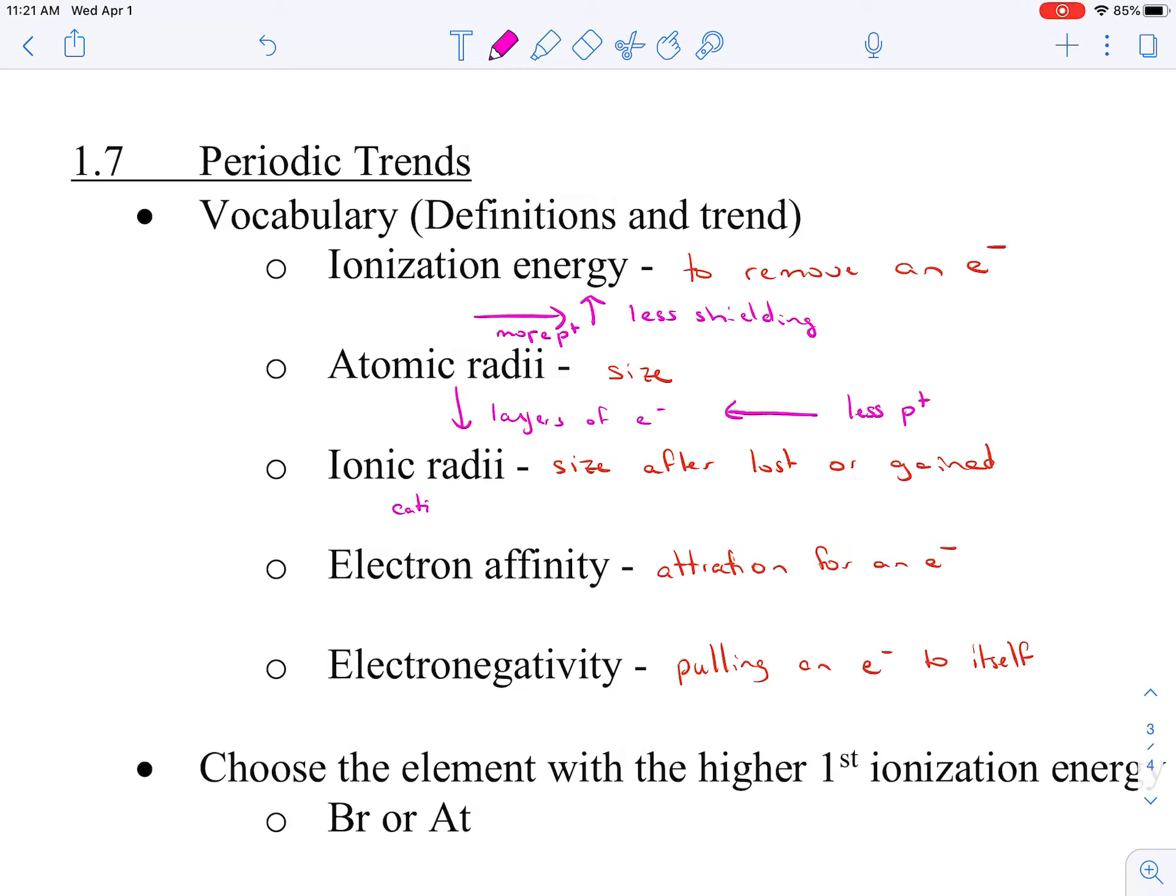Ionic radii, our cations, remember cations are the positive ones, are smaller, and that's because they have a greater proton to electron ratio. And our anions, which are negative, are going to be a little larger, and again that's due to our ratio of protons to electrons.